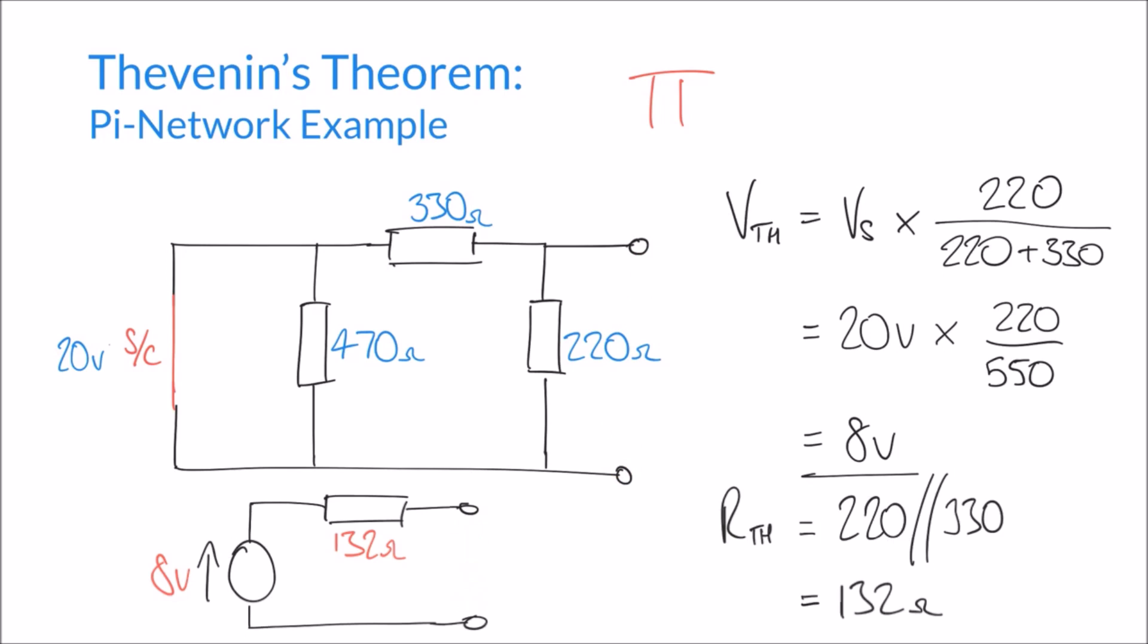We can take any measurements across the terminals that we like, and we'll find that whether we measure the voltage here or here, or the impedance here and here, or the short circuit current, so on and so forth, we're going to get an equivalent result, even though this is a much simplified circuit.